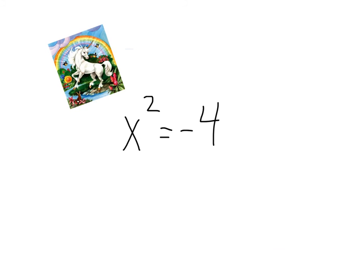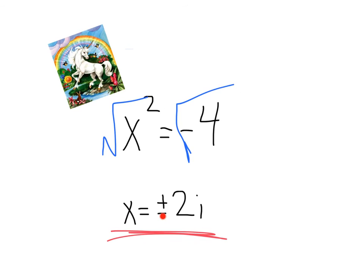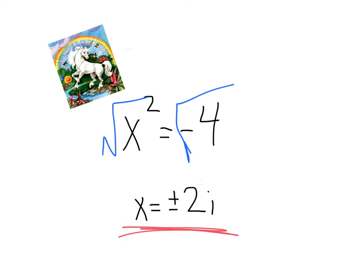As a last note, remember to watch out for imaginary solutions. If we square rooted a negative equation, we'd get x equals plus or minus 2i — the 2 coming from the square root of 4, and i as an imaginary number from the square root of a negative. Just keep in mind that you might encounter imaginary solutions when solving these types of equations.